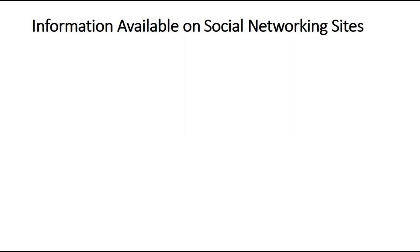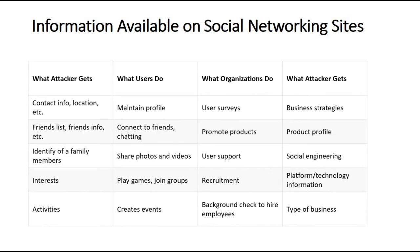Information available on social networking sites includes contact info, locations, friend lists, friend info, family members, interest and activities, surveys, user support, and recruitment details — all of which can be gathered from social networking sites.